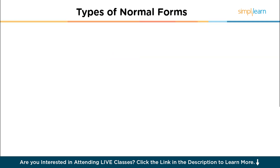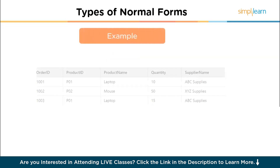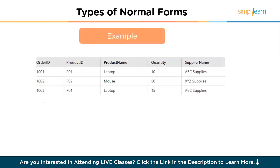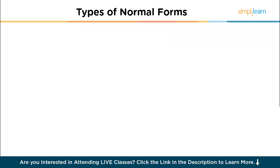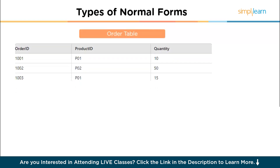Consider the following table that is in 1NF, with order ID, product ID, product name, quantity and supplier name. The problem is partial dependency: the product name and supplier name depend only on product ID, not the entire primary key which is order ID and product ID. This violates 2NF. To bring the table into 2NF, we separate the data into two tables — an order table and a product table — to remove partial dependencies.